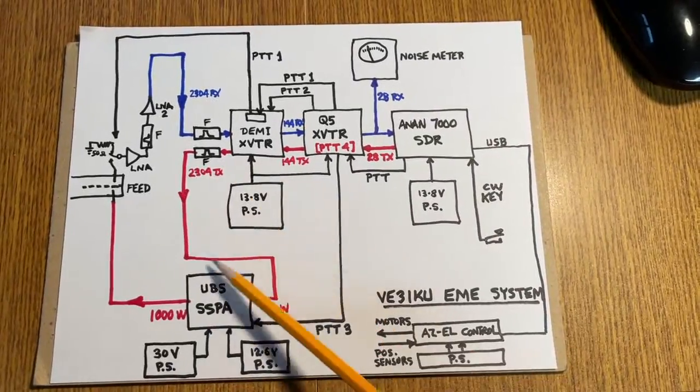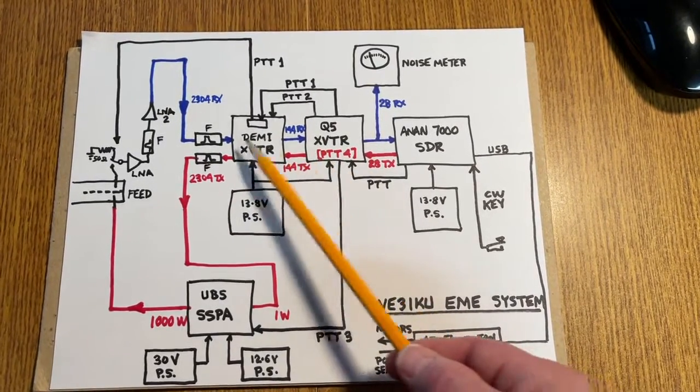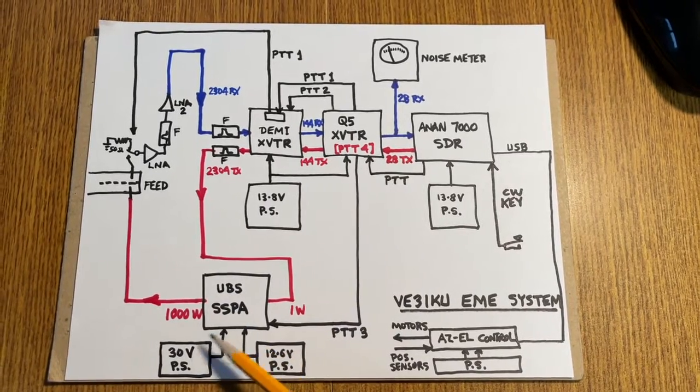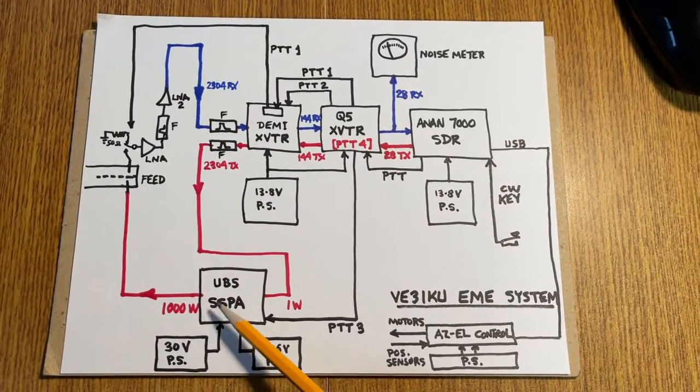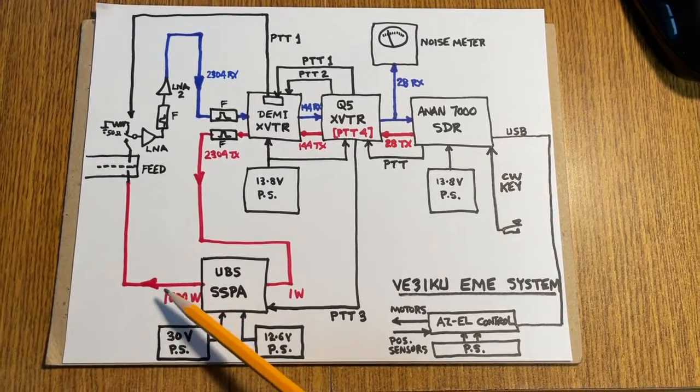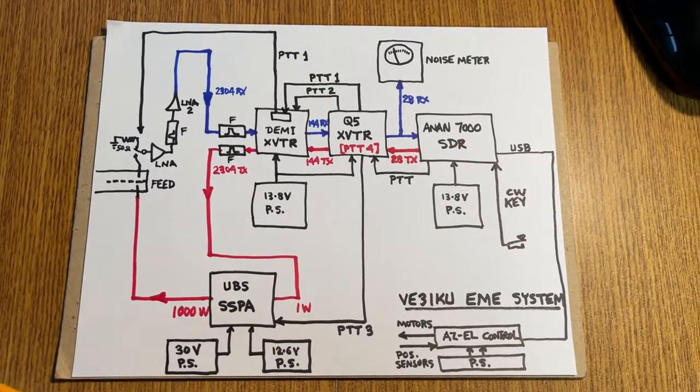So there's about a 1-watt signal here. The strengths can be adjusted by adjusting the gains of these transverters. The solid-state PA then by Unique Broadband Systems provides close to a kilowatt output which then goes through a set of coaxes to the transmit probe in the feed and the horn.